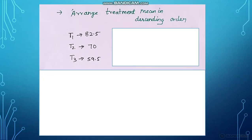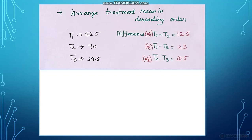The first step is to arrange the treatment means in descending order. So T1 is the highest mean value, T2 is the second highest, and T3 is the third highest. Next, you want to find the differences: T1 minus T2, T1 minus T3, and T2 minus T3. We call these alpha 1, alpha 2, and alpha 3.